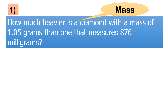Okay, so paano natin isolve ito? Gawin muna natin magkapareho yung kanilang units. So first, the two facts: 1.05 gram, the first diamond. So, yung problem, wala siyang hinahanap na unit sa ating magiging sagot. So, it can be gram or milligram. So, convert natin yung isang given para maging kapareho ng pangalawang given. Pwedeng i-convert mo yung gram to milligram or milligram into gram.